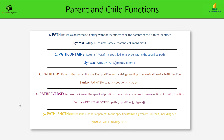DAX provides five functions to help users manage data presented as a parent-child hierarchy in their models. The very first function is the PATH function, which returns a delimited text string with the identifiers for all the parents of the current hierarchy. The syntax uses PATH with your ID column — for example, your employee ID — and its parent column, which in our case would be the manager ID.